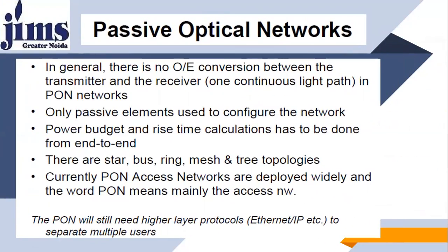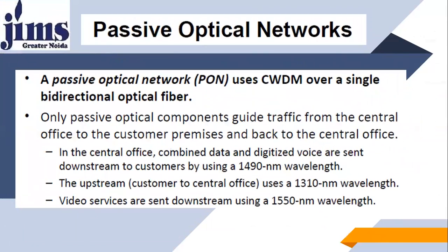Coming to Passive Optical Networks: in general, there is no OE conversion between the transmitter and the receiver in PON networks. Only passive elements are used to configure the network. Power budget and link time calculation has to be done end to end. There are star, bus, ring, mesh, and tree topologies in this network. Currently, PON access networks are deployed widely. PON will still need higher layer protocols like Ethernet and IP to separate multiple users. Passive Optical Network, PON, uses WDM over a single bidirectional optical fiber. The multiplexing technique used in this passive optical network is Wavelength Division Multiplexing.